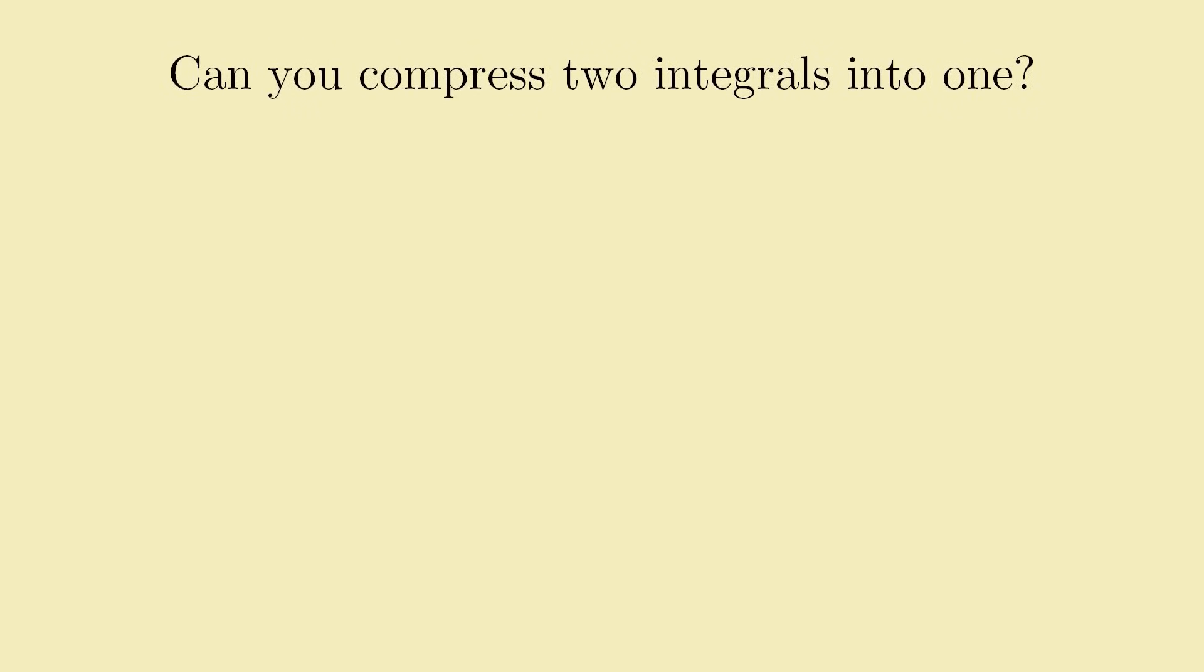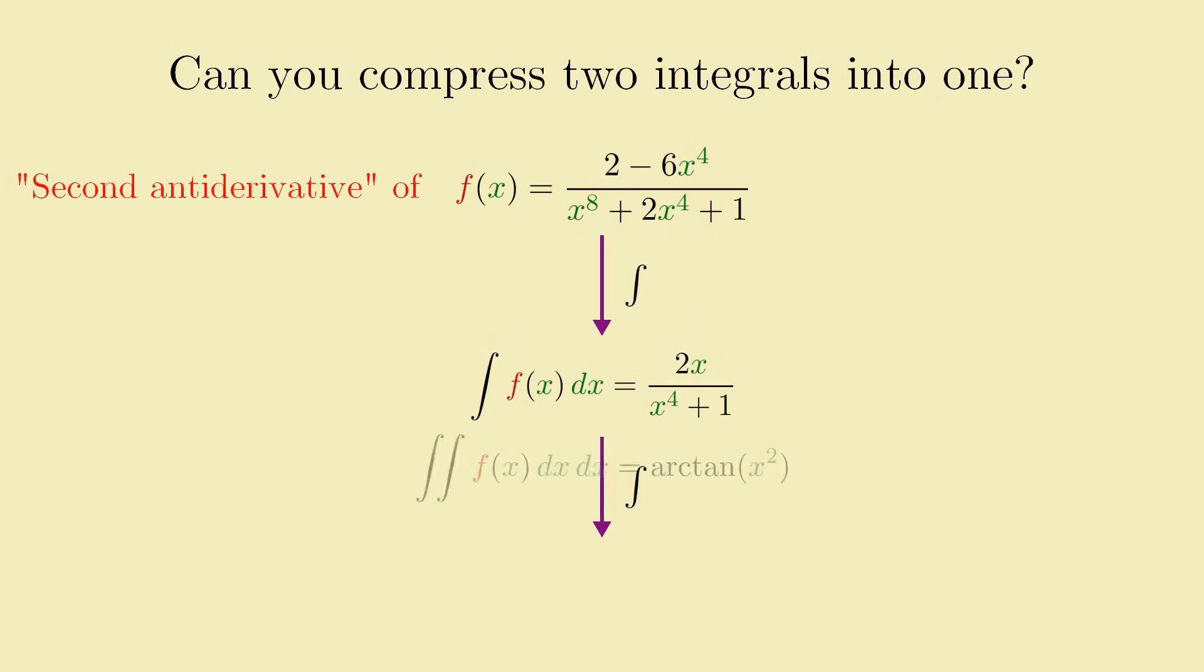Can you compress two integrals into one? Let's say you want to find the second antiderivative of this function. That is, you want to find the integral of the integral of this function. So you'd have to integrate once and then integrate again, which is a bit of a hassle. But is there a way to skip that intermediate integral and just calculate the entire second antiderivative in just one step?